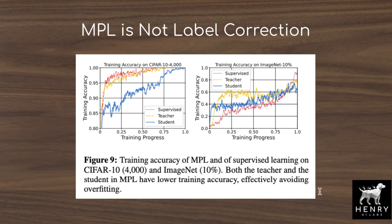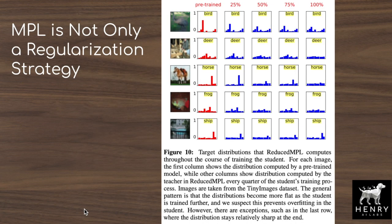Further analysis shows the teacher is not merely mimicking supervised learning with perfect labels — if it were, student accuracy curves would match supervised learning. Visualizations of how the teacher labels CIFAR-10 data throughout training reveal interesting behaviors: the highest-confidence labels don't get sharper over time, and the teacher doesn't simply flip labels or dampen distributions in heuristic ways typical of regularization in the class label space.